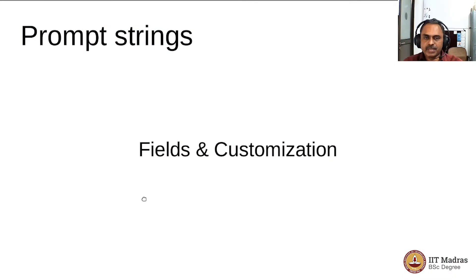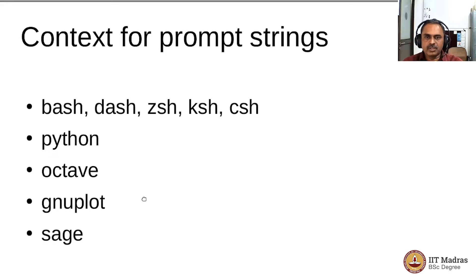Here we come to the discussion about prompt strings and the fields that you can insert as part of the prompt string and customizing them for your needs. The context for prompt strings has come already when we were using the bash shell. There are a lot of shells in the Linux operating system like the dash shell, z shell, k shell, and c shell apart from bash. Each of these will have a default configuration for the prompt, and by recognizing the nature of that prompt you can see if there is any configuration change you want to do.